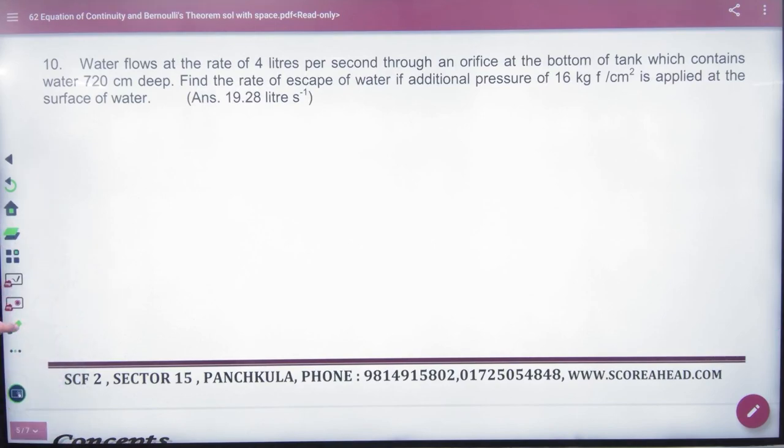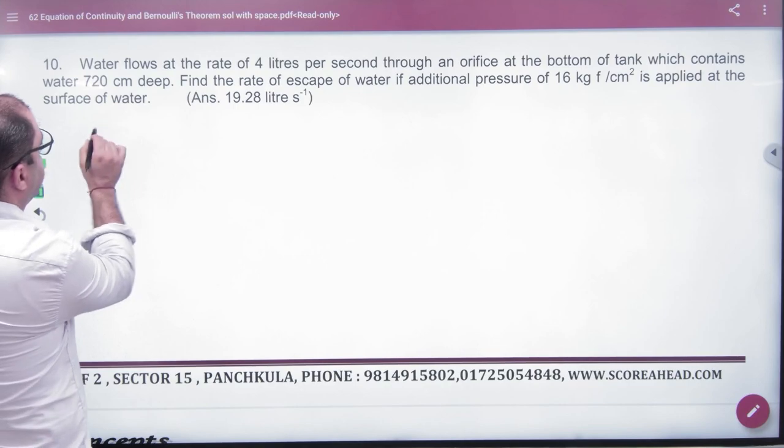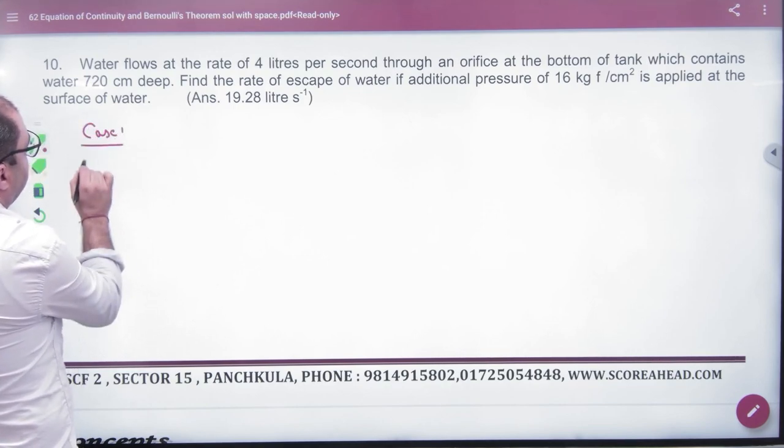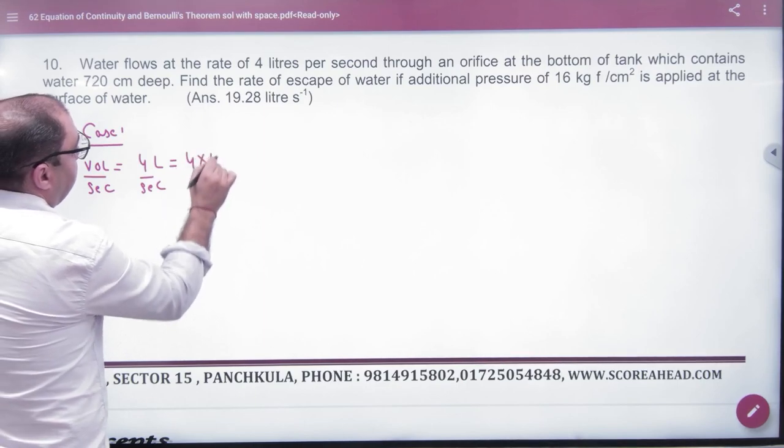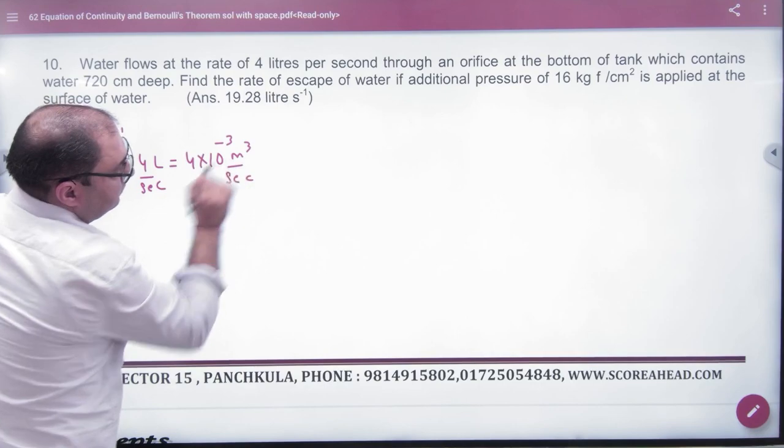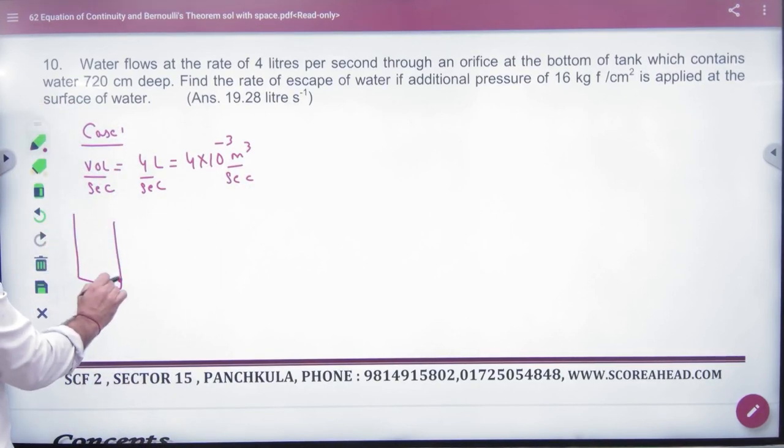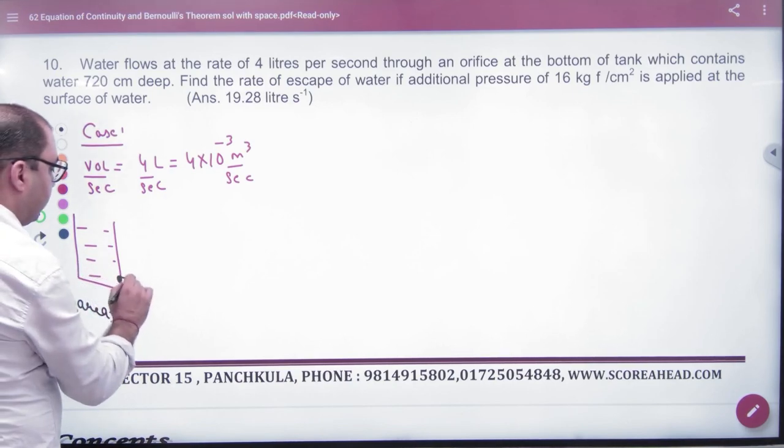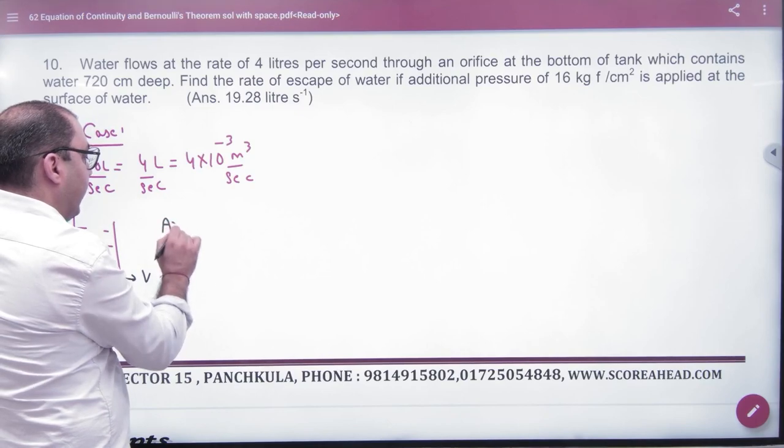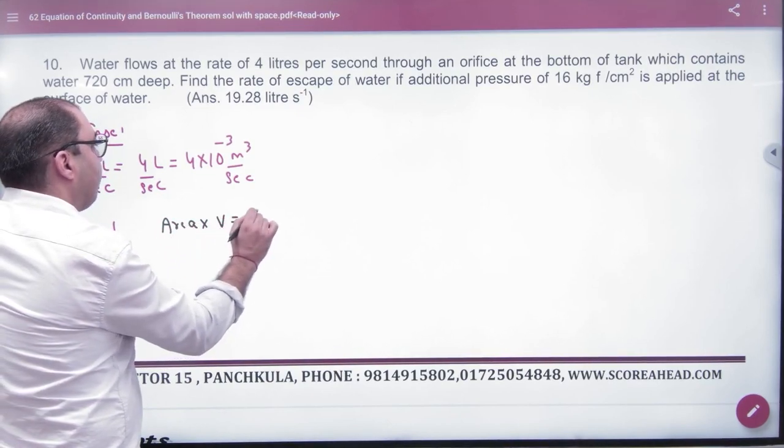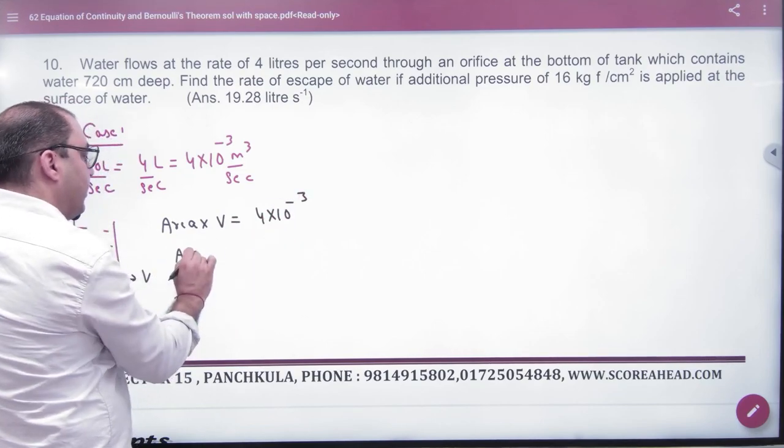Water flows at a rate of 4 liters per second. Four liters per second, that means 4 into 10 raise to power minus 3 meter cube per second. So bottom is here, here is orifice. The problem is that it is not giving velocity, what is giving is volume flowing per second. So we know the area of orifice is negligible, but what is area and what is velocity here?